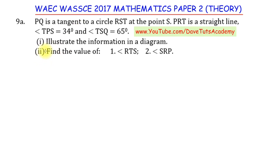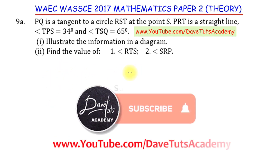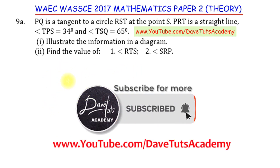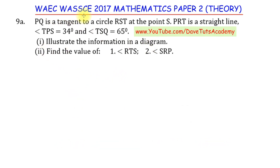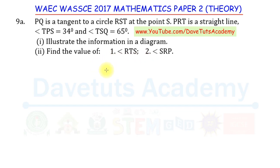Typically when solving questions on circle theorems, we are given a diagram with some labels, definitions, and angles, and we are asked to calculate some other angles. But in this particular question from the WAEC/WASSCE 2017 mathematics theory paper, that is not the case. What we have here is a word problem in which we are to construct the diagram ourselves and find the solution.